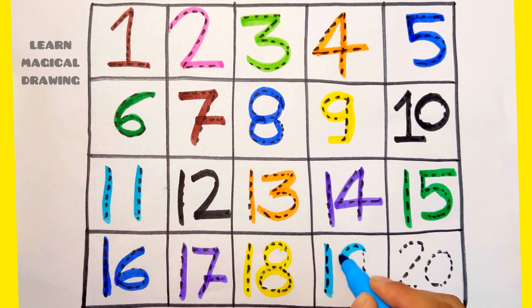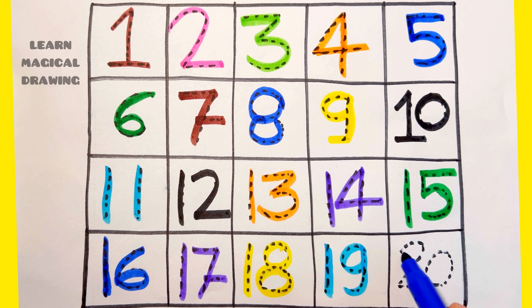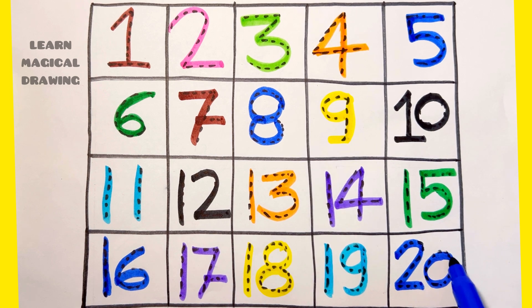Number 19: 1, 9, 19. Number 20: 2, 0, 20.